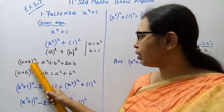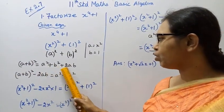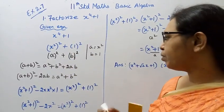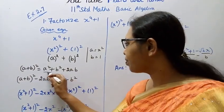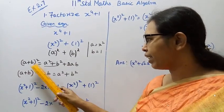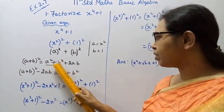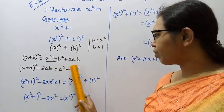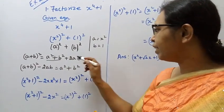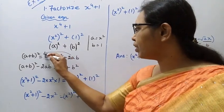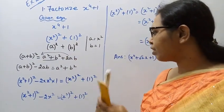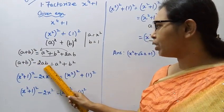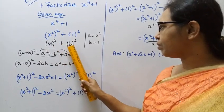We know that (a + b)² = a² + b² + 2ab. From this, a² + b² = (a + b)² - 2ab. So we use this to rewrite a² + b².